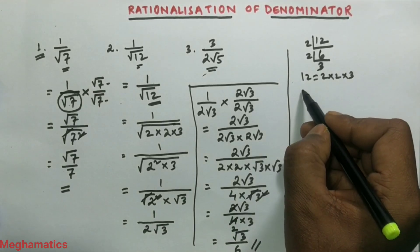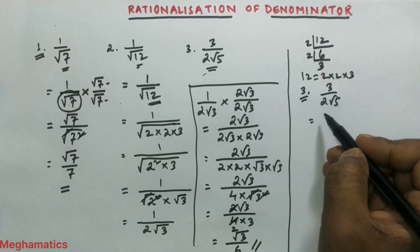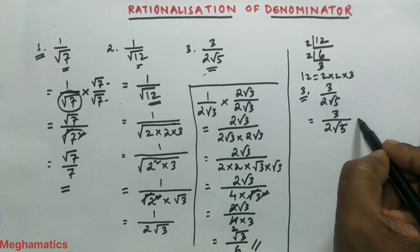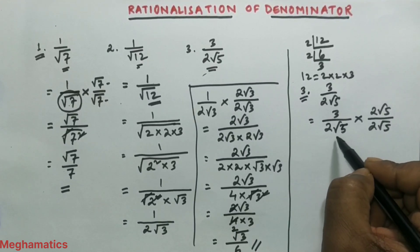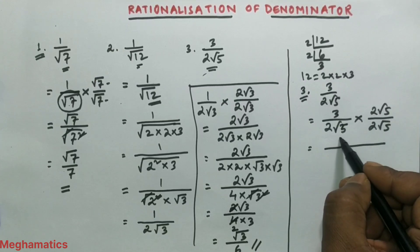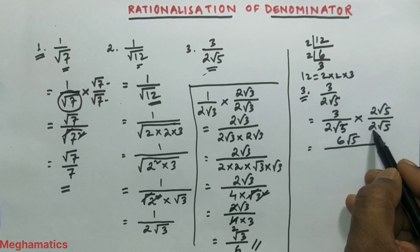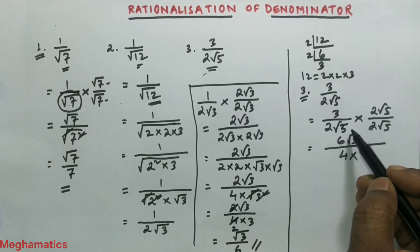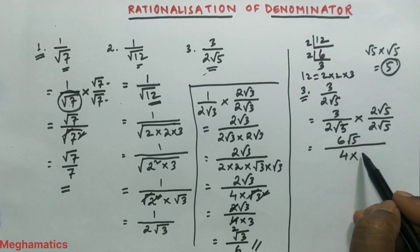Now question 3: 3 by 2 root over 5. Since both 2 and 5 are prime numbers, we rationalize directly. We multiply the same denominator, 2 root over 5, in both numerator and denominator. In the numerator, 3 into 2 is 6 and we bring down root over 5, giving 6 root over 5. Root over 5 into root over 5 equals 5 directly.